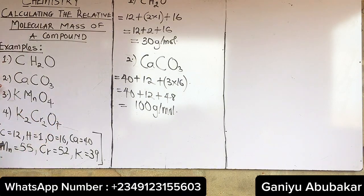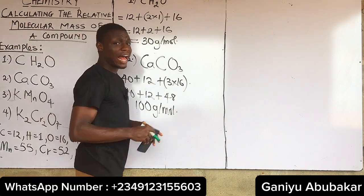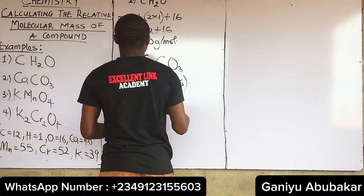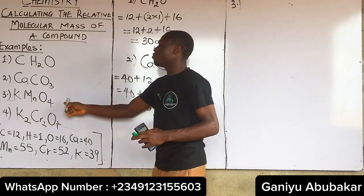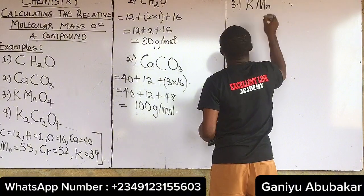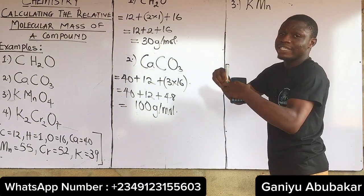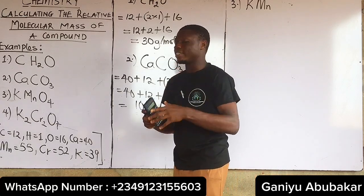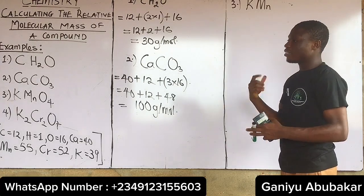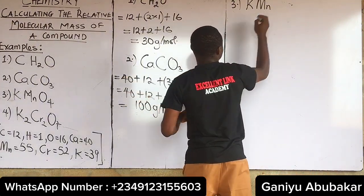Let's do number three, and you can do number four as an assignment — put your answer in the comment section below and I'll reply as fast as I can. For number three, we are asked to calculate the relative molecular mass of potassium (K) permanganate — KMnO₄. By the way, tell me in the comments what MN stands for. I have four molecules of oxygen (O₄).